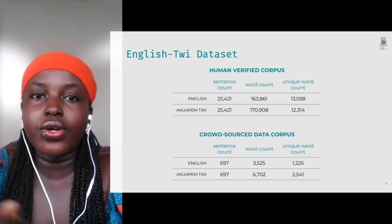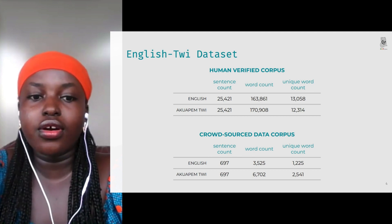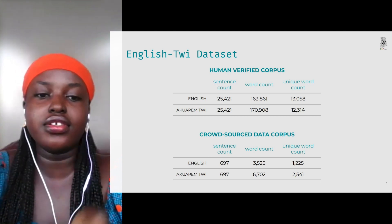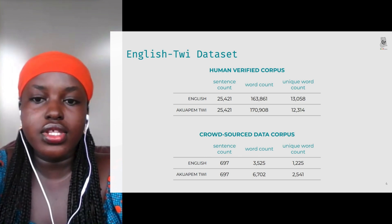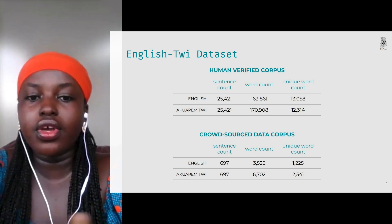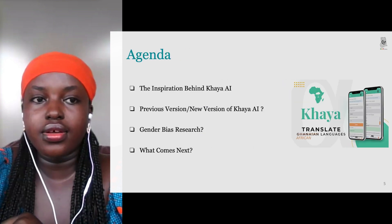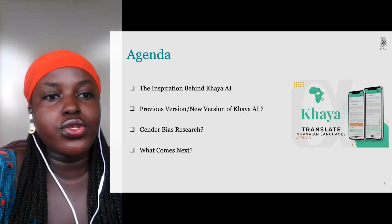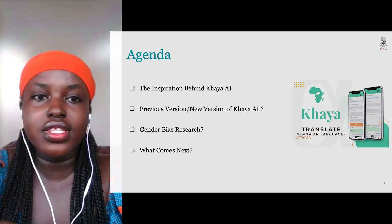This is our first open source system, which is available online. We worked on an English to Twi parallel corpus, where we have English datasets and their corresponding Twi translations. We also crowd-sourced data from the community using Google Forms to help people contribute to the data collection process. Today the main agenda is to talk about gender inclusiveness in the Kaya AI app we built.